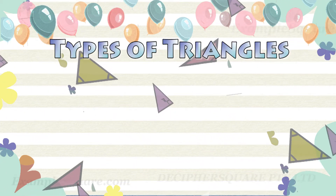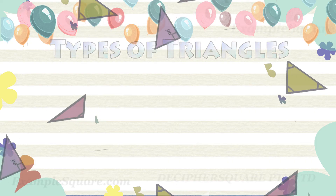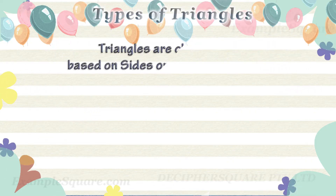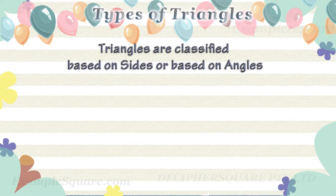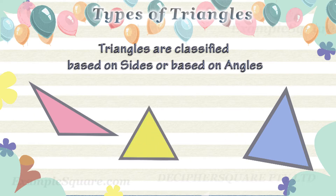Types of Triangles. Triangles can be classified based on the sides or based on the angles.